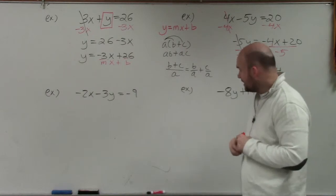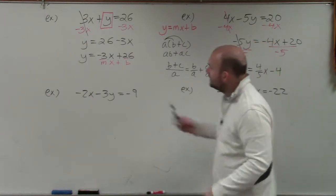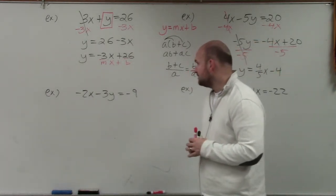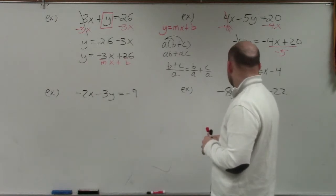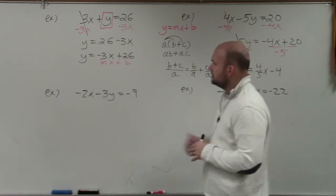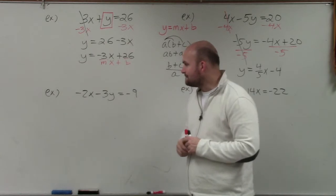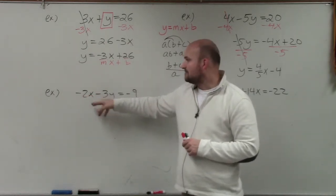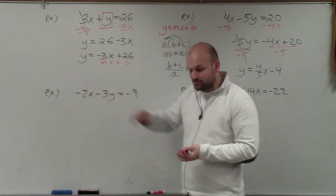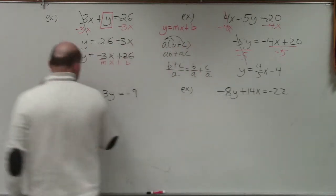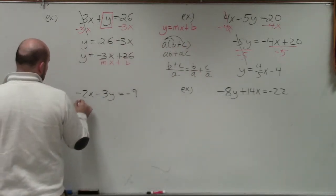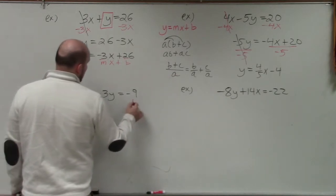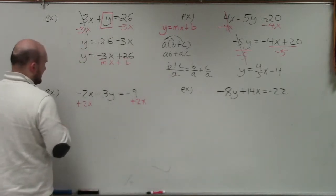In this example here, we have our y again. You can see we have a negative 2x. So we're subtracting. We want to undo subtraction, which is going to be to add. So we're going to add a 2x to both sides. I have a negative 3y is equal to a positive 2x minus 9.